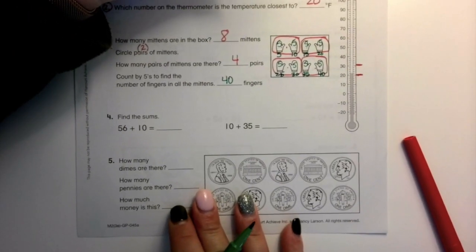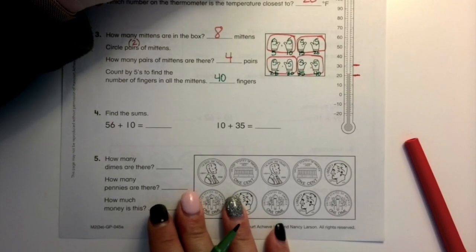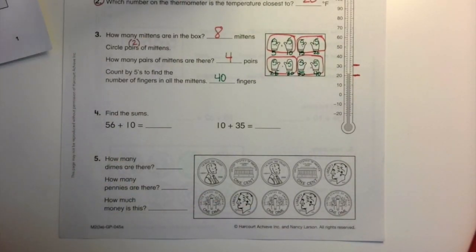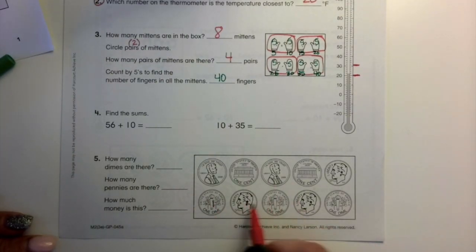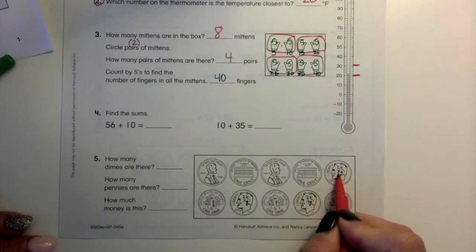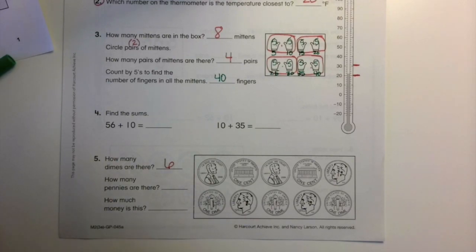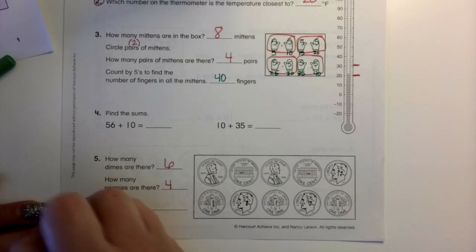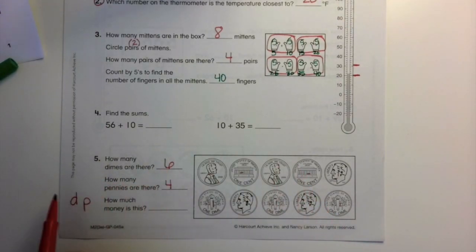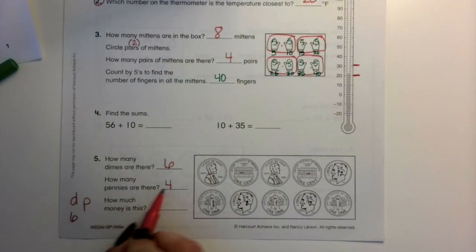I also would like to go over number five with you, please. Number five says, how many dimes are there? How many pennies are there? And how much money is this? So, let's check the dimes first. We've got one, two, three, four, five, six. Six dimes. How many pennies? One, two, three, four. So we need to know how much total money that is. Remember that I can have my D and my P. How many dimes? How many pennies? Don't forget your cents at the end. How much total money is that? Sixty-four cents.